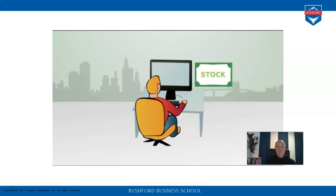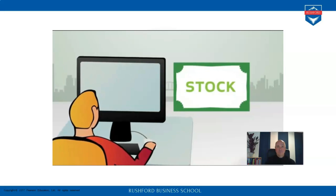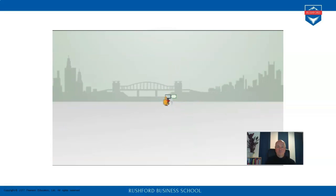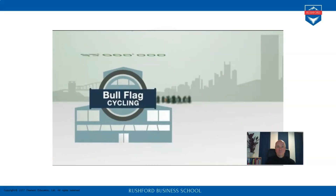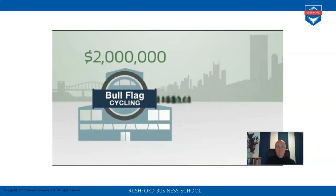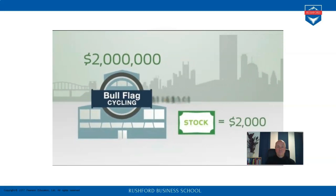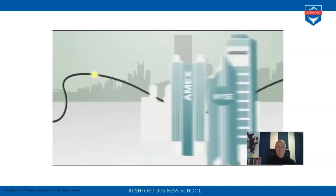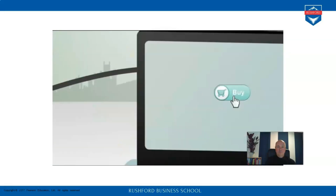Let's suppose the price doesn't change after the IPO, so our investor purchases a single share on the open market through his online stock broker for one thousand dollars. If the company does well and profits increase, the value of the company is likely to go up. As a result, the stock price may increase as well, and our investor could turn a profit by selling his shares to another investor in the stock market.